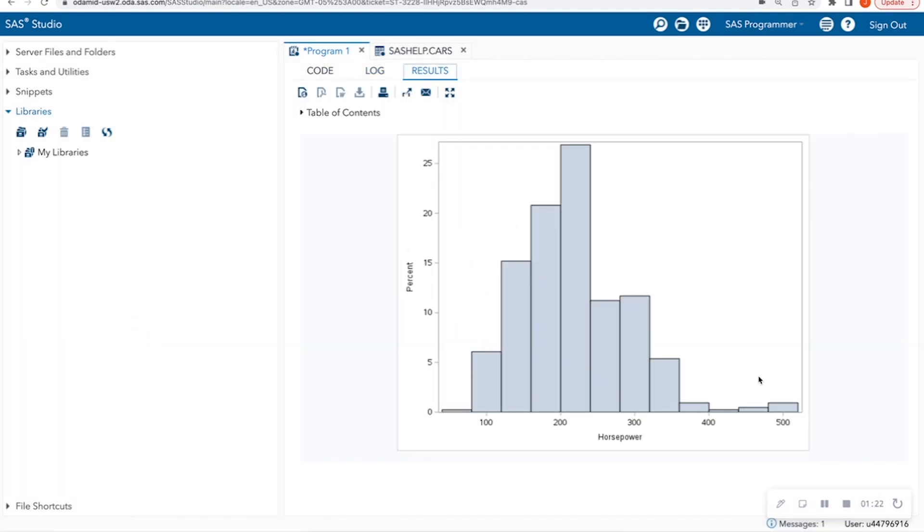And here I get a nice distribution of horsepower. It doesn't really look normally distributed that much. I see that I have a few cars that are very high in horsepower. And I have about one car that is very low in horsepower.